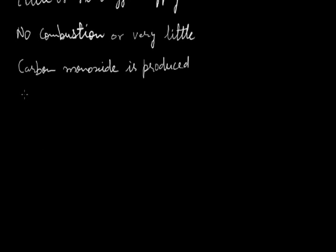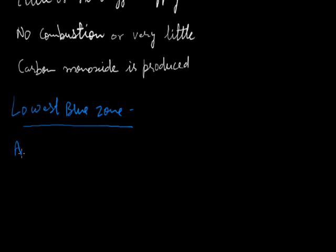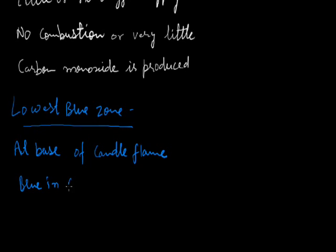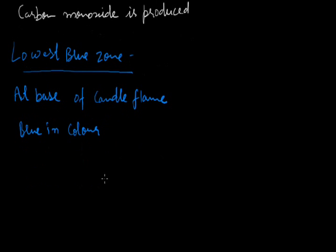At the bottom of the candle flame there is another zone that we call the lowest blue zone. It is located at the base of the flame. This zone is blue in color, and the reason for the blue color may be the combustion of carbon monoxide.